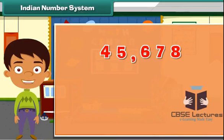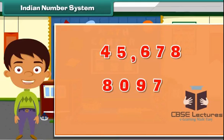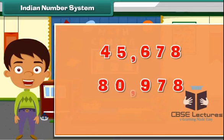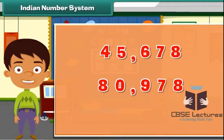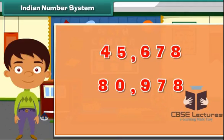Consider another number 80978. It will be written as eighty comma nine seven eight in the Indian number system and read as eighty thousand nine hundred seventy-eight.